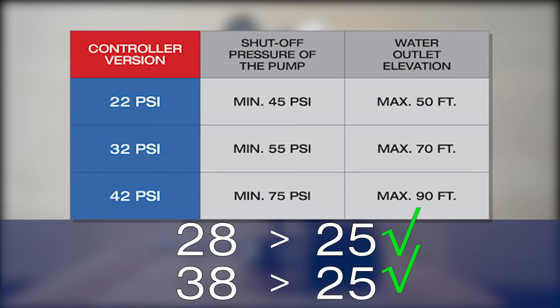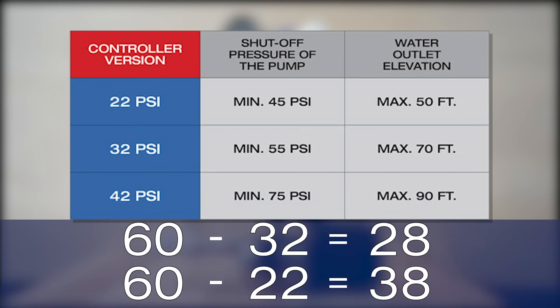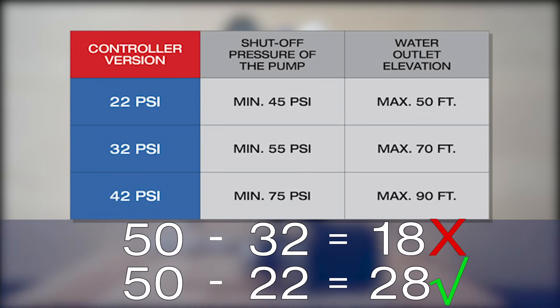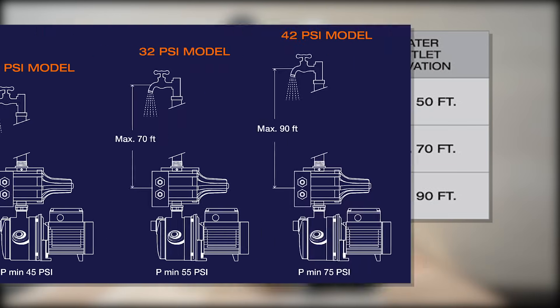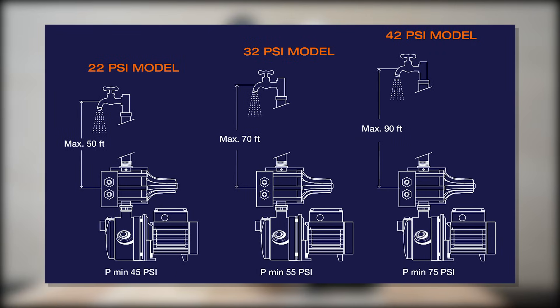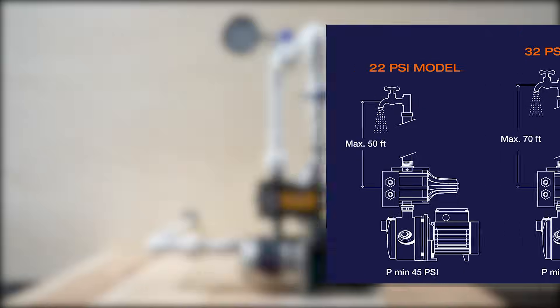However, if the shut-off pressure of your pump is 50 psi, you will have to select the 22 psi version. Also keep in mind that the elevation between the controller and the highest faucet cannot be more than 50 feet, 70 feet, or 90 feet depending on the controller model selected. Otherwise, the controller will never operate properly.